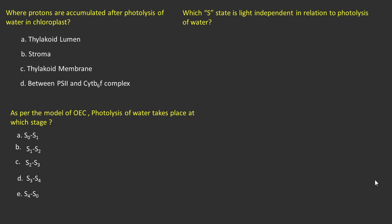Third question: which S state is light independent in relation to photolysis of water? Options are S0 to S1, S4 to S0, S2 to S3, S1 to S2, and none of the above.